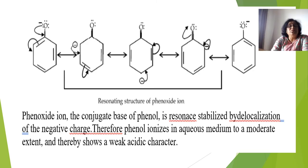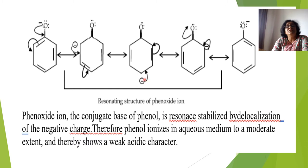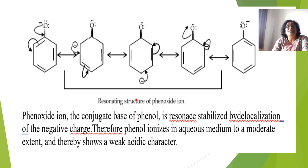The phenoxide ion has oxygen with three lone pairs and a negative charge. The electrons move towards the ring, forming double bonds, and the negative charge delocalizes across ortho and para positions through resonance. Because the phenoxide ion (conjugate base) is resonance-stabilized, phenol shows acidic character in aqueous medium.